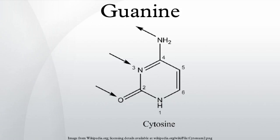Guanine was named in 1846. Between 1882 and 1906, Fischer determined the structure and also showed that uric acid can be converted to guanine. Guanine can be hydrolyzed with strong acid to glycine, ammonia, carbon dioxide, and carbon monoxide. Guanine is first deaminated to xanthine. Guanine oxidizes more readily than adenine, the other purine derivative base in DNA.